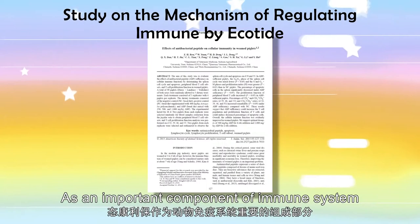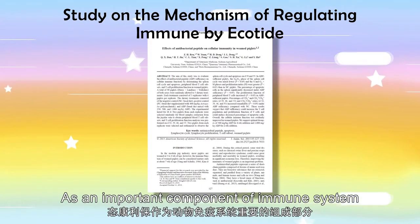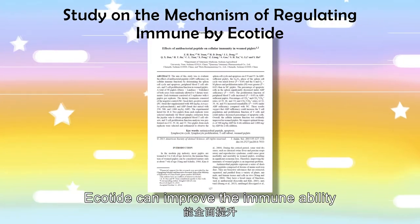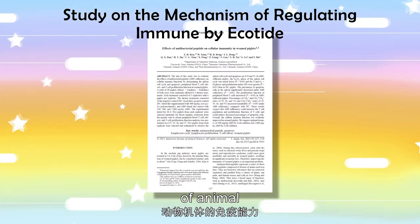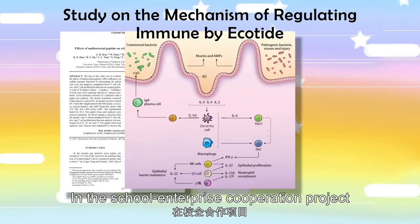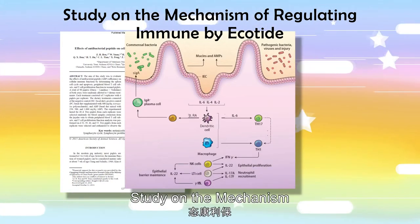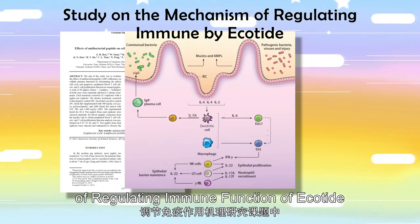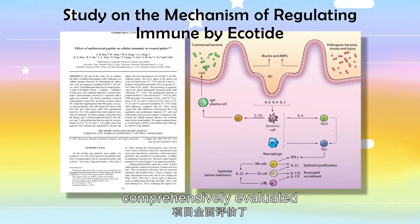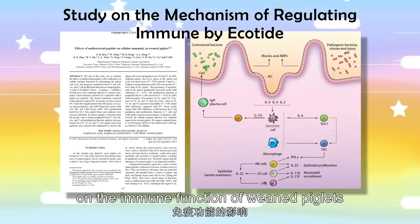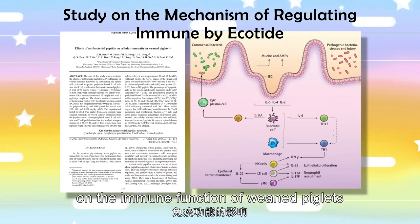As an important component of the immune system, Equotide can improve the immune ability of animals. In the School-Enterprise Cooperation Project, a study was conducted on the mechanism of regulating the immune function of Equotide.